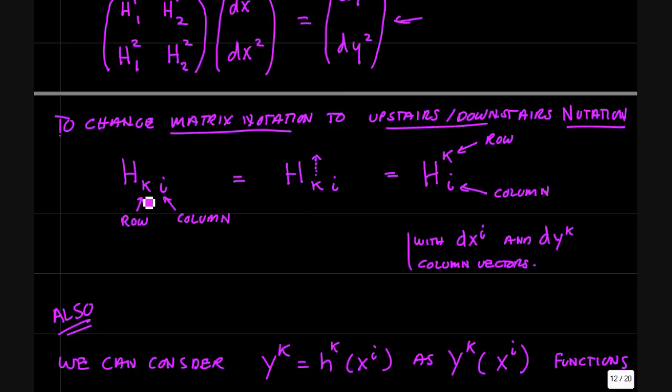To change standard matrix notation to the upstairs downstairs index notation, you take h of ki, rows and columns, and you levitate the index k upstairs. And so this allows you to do the Einstein summation on these indices. And if you wanted to think of h as a tensor, then h is going to be a mixed tensor - one contravariant index and one covariant index.